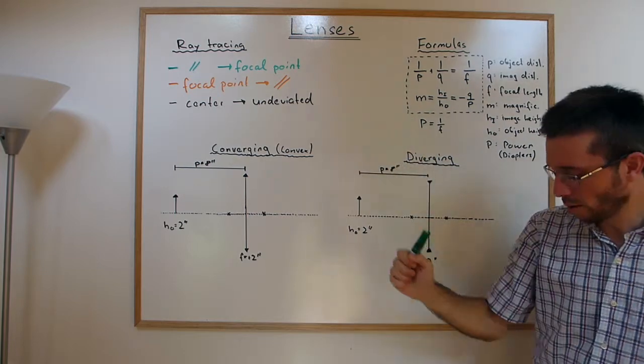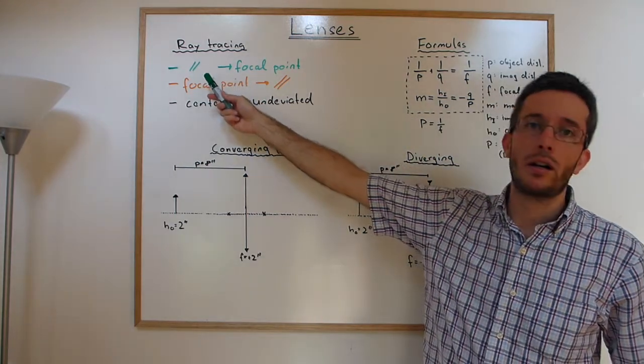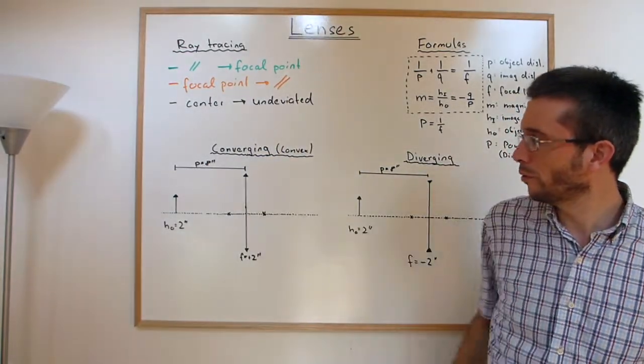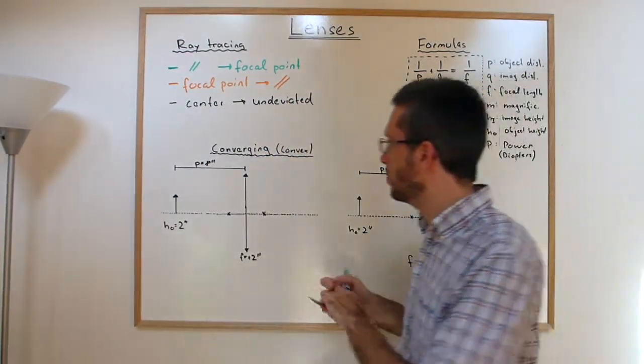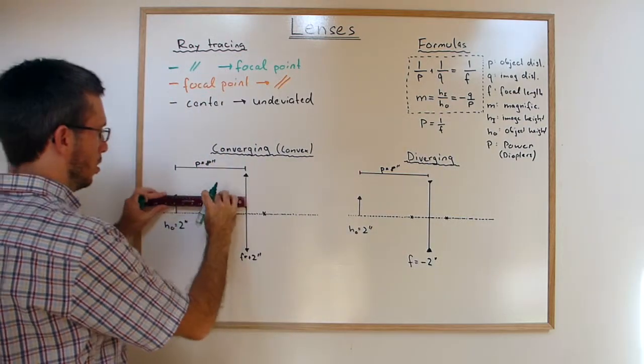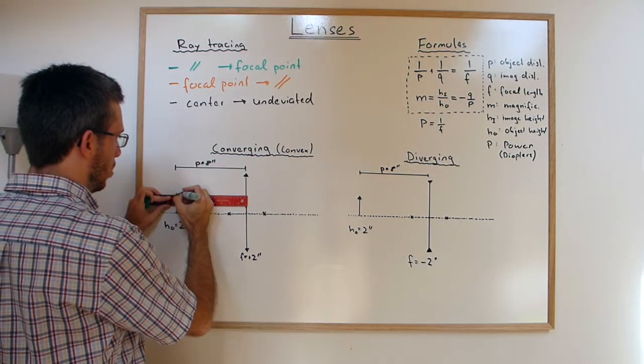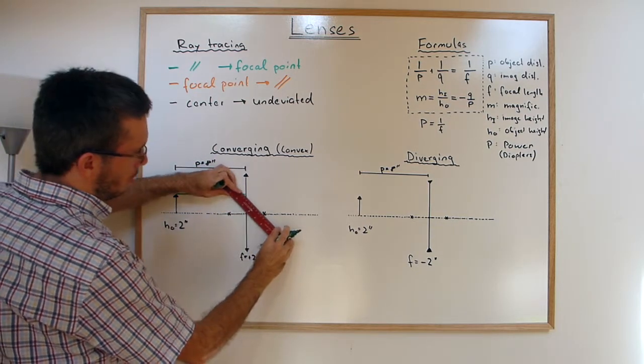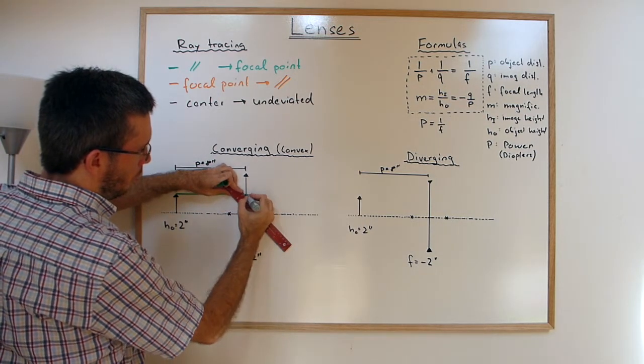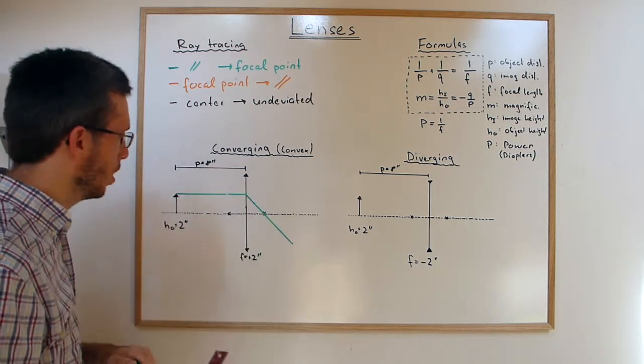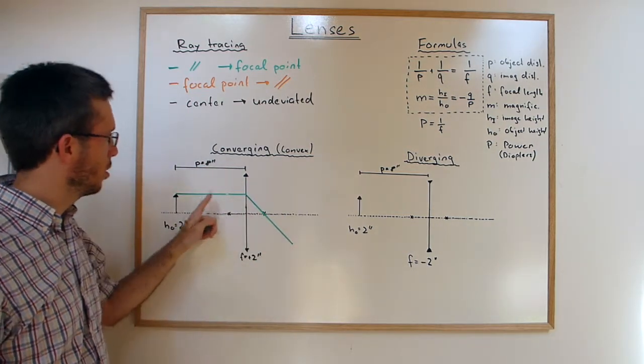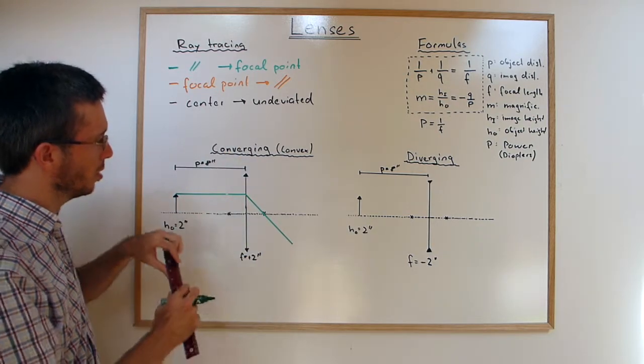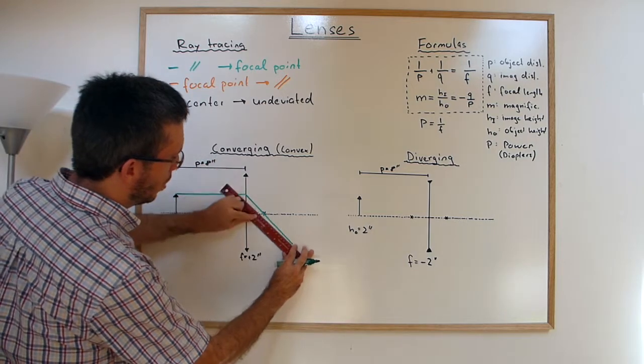The first one are parallel rays. They go through the focal point. So for the converging lens, this means a ray that is parallel will go through the focal point on the right. Actually, this is why it's called a converging lens as it converges parallel rays on the right side.